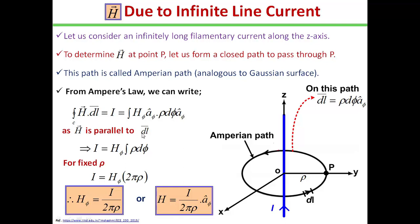A_φ is the unit vector along the concentric circle path. As H is parallel to dl, the integral can be written as H_φ integral ρ dφ. As we have chosen a concentric circle as the Amperian path in view of the above equation, which shows that H is constant provided ρ is constant. Since ρ is the distance from the origin to the point P that is under observation, so for the fixed ρ, we will get I is equal to H_φ 2πρ.